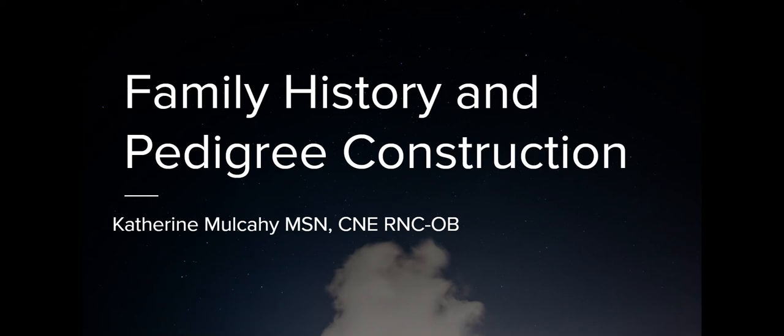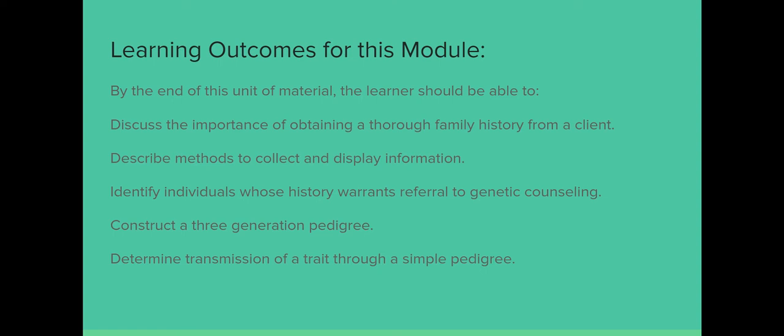Today's lesson is about family history: the importance of obtaining it, displaying it, and interpreting it so we can help clients determine their genetic risk, modify it, or screen for diseases earlier. By the end of this unit, you should be able to discuss the importance of obtaining a thorough family history, describe methods to collect and display that information, identify individuals at risk who could use a referral to genetic counseling, and construct a three-generation pedigree to determine the probable transmission of a trait.